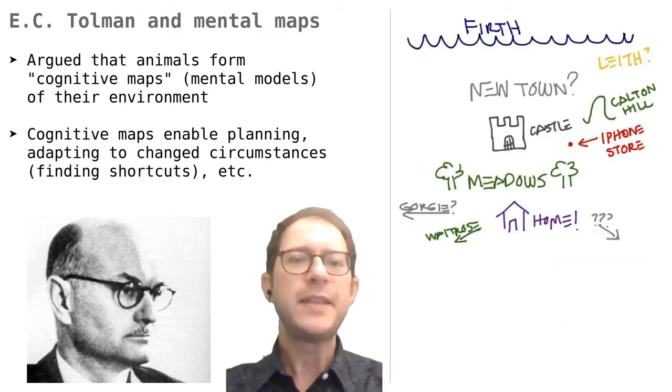For example, this is a map drawn by someone about a month after moving to a new city. The map includes some salient features like the person's home, a castle, a hill, meadows, and an iPhone store.